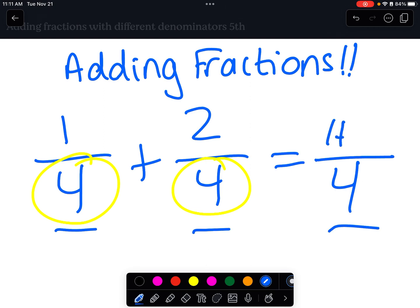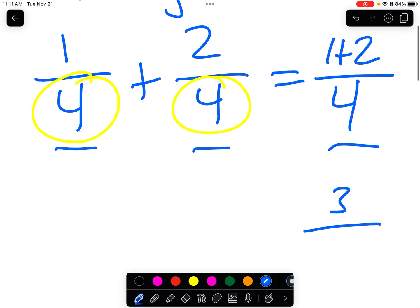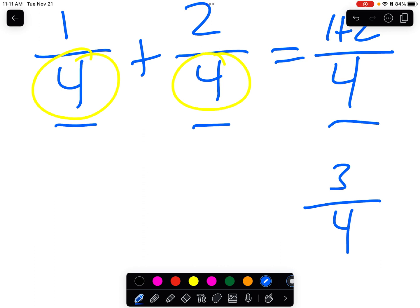And then all we do is we add the numerators. 1 plus 2, that's 3. And then the denominator is 4. The answer is 3 fourths. So 1 fourth plus 2 fourths is 3 fourths.